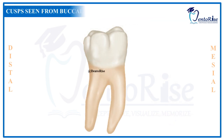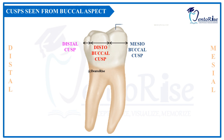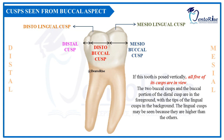The cusps visible from the buccal aspect are the meso-buccal cusp, the disto-buccal cusp, the distal cusp, the meso-lingual cusp and the disto-lingual cusp — meaning all five cusps are visible from this aspect. The meso-buccal cusp is present on the mesial and buccal side, adjacent to it is the disto-buccal cusp, and the distal cusp is adjacent to the disto-buccal cusp. The lingual cusps, being greater in length than the buccal cusps, can also be seen from the buccal aspect: the meso-lingual cusp is on the lingual side mesially and the disto-lingual cusp is towards the distal surface.